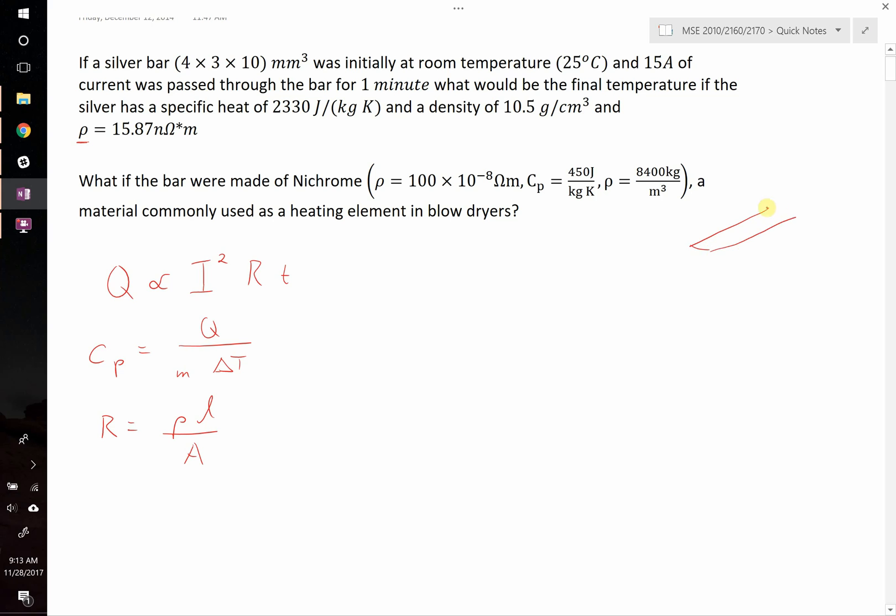So if we assume that this matchstick shaped bar has the current passing this direction, so the 10 millimeters is the long direction, then we can go ahead and do this. Let's start writing it out.